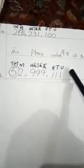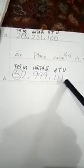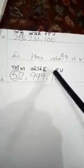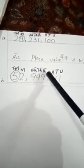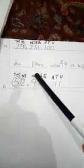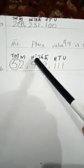Now Part B. We will give the place value from the right hand side. 1 is in unit. 1 is in tens. 1 is in hundred. 9 is in thousand. 9 is in ten thousand. 9 is in hundred thousand. 2 is in million.